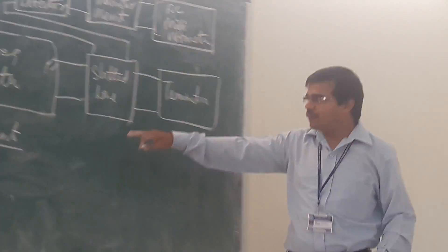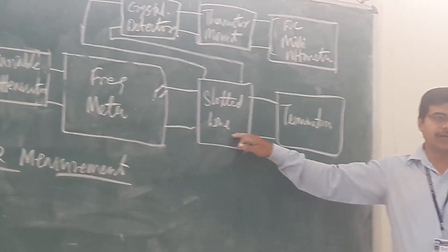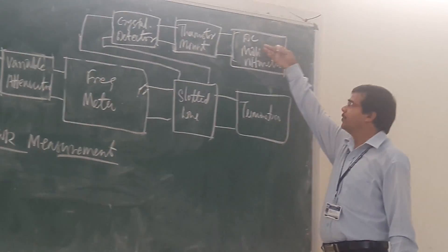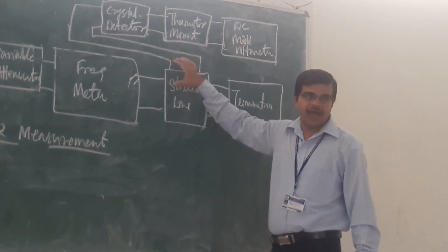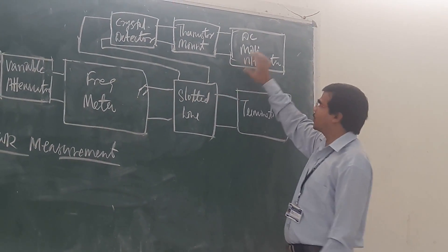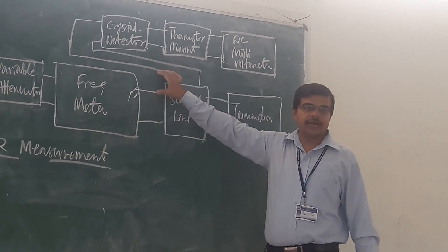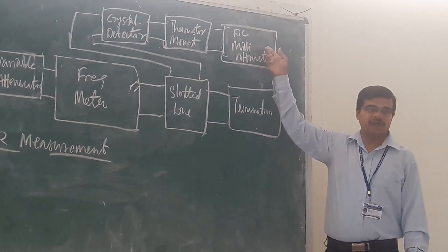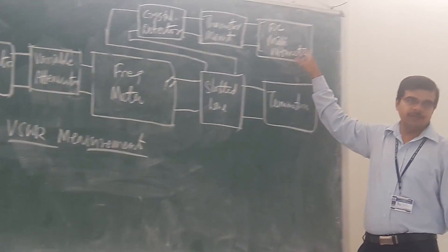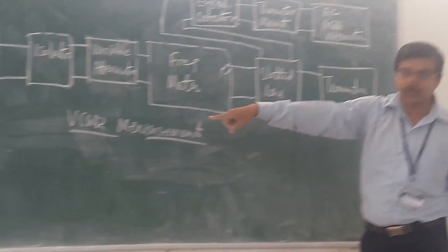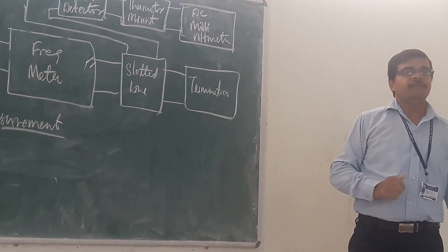Now let us see the setup in the case of your VSWR measurement. Here you are having the slotted line. This slotted line is there and here we are having the DC millivolt meter. In the slotted line, we will vary the probe position so as to get the maximum value. Where we are getting the maximum value, we will stop and note down that reading — that will be the maximum voltage. Then we will move it and find where we are getting the minimum voltage, note that down, take the ratio of maximum and minimum voltage, and from that we calculate the VSWR.